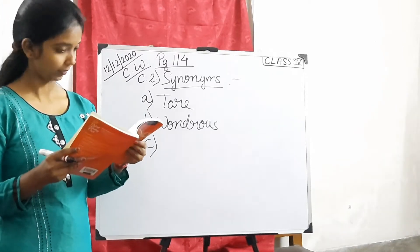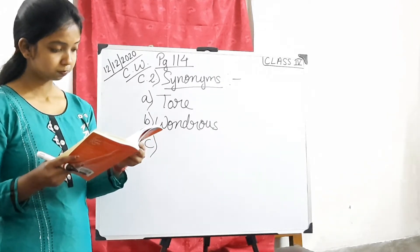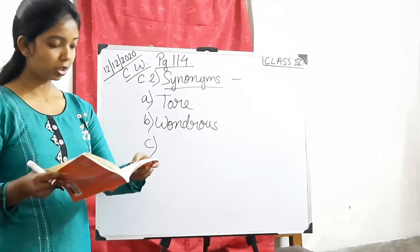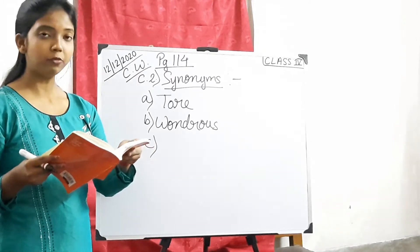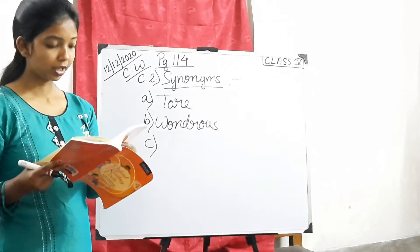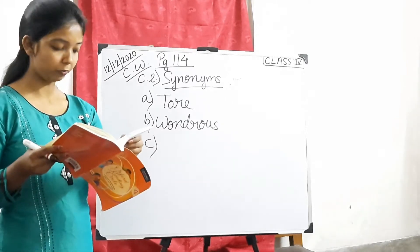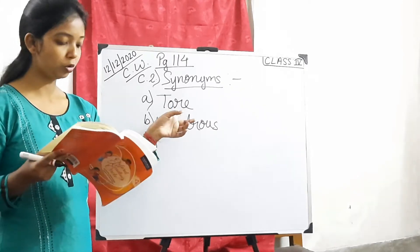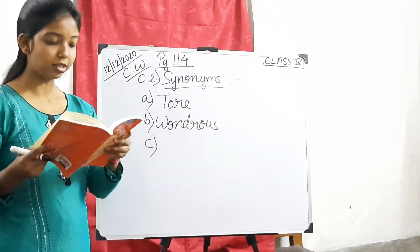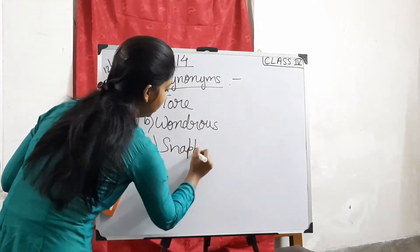If I come to the poem, see page 112, third stanza. Have you seen? Last line, you will find the word wondrous. Clear? Next. In the same stanza, that is third stanza of page 112, third line, you will find the word tore. Got it? In the same stanza, same line, that is third line itself, you will find the word snapped. S-N-A-P-P-E-D. Snapped means breaking something or broken job.